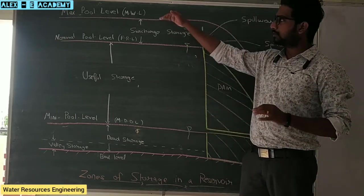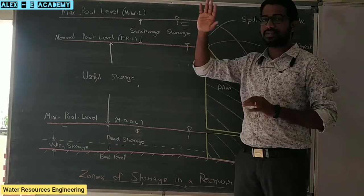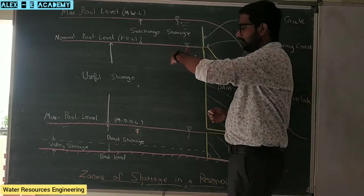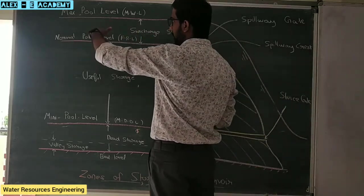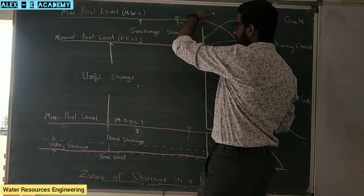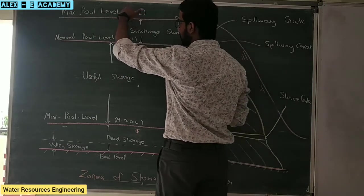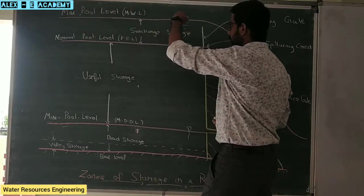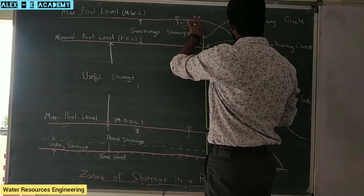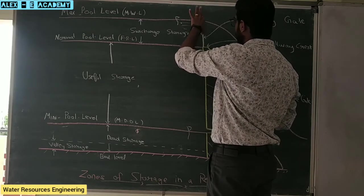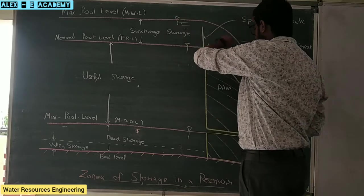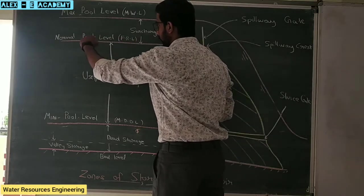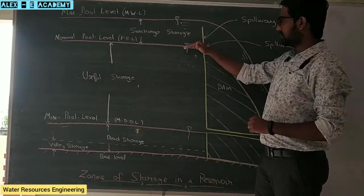The maximum pool level is associated with the flood. Usually, the maximum pool level is the highest point. When the flood is excessive, the floodwater overtops the dam. The quantity of water determines the maximum level. The maximum pool level is the volume. This is the normal pool level.